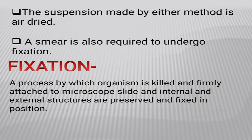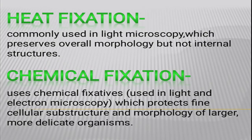After that, next comes fixation. Fixation is a process that kills the organism, attaches it to the slide, and preserves and fixes the organism's internal and external structure in position. Fixation can be achieved in two ways: heat fixation and chemical fixation. Heat fixation is commonly used in light microscopy — it preserves cell morphology but does not preserve internal structures, as the enzymes would otherwise destroy the morphology. Heat fixation kills the organism and attaches it to the microscopic slide. Chemical fixation is used for light and electron microscopy and uses chemical fixatives to protect fine structures and the morphology of large and delicate organisms.